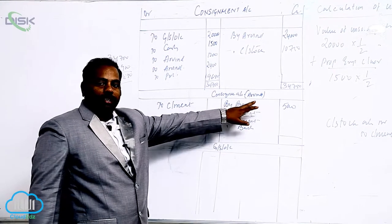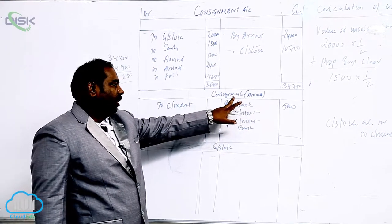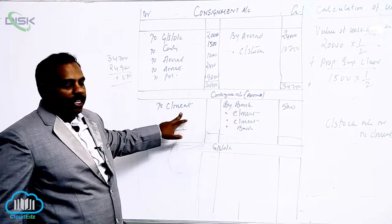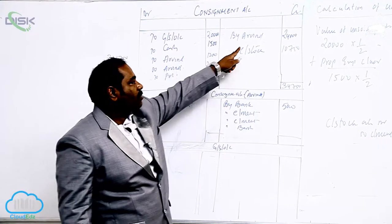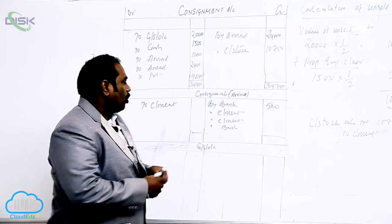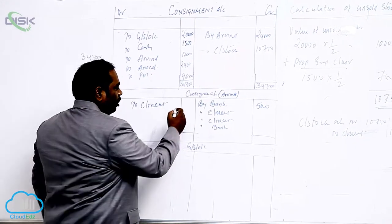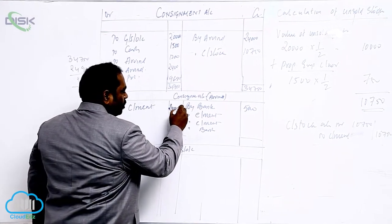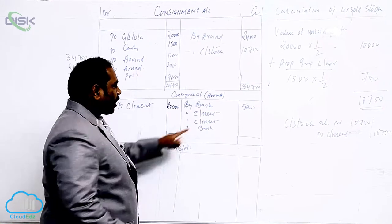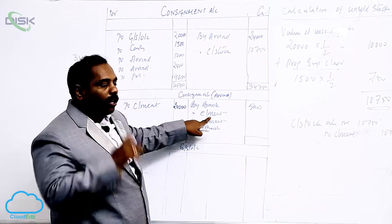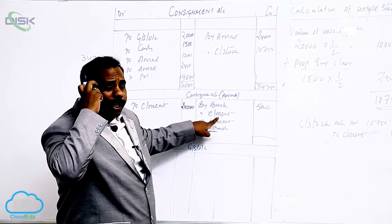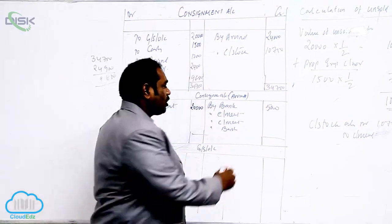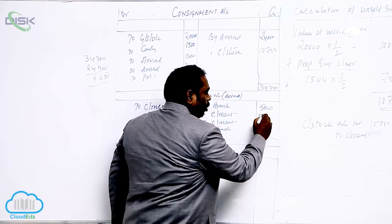In the books of Arvind, in the books of the consignee, the consignment account is for sales. What is the sales made by Arvind? 24,000. By consignment is for expenses made by consignee. What is the expense made by consignee? 1,200.